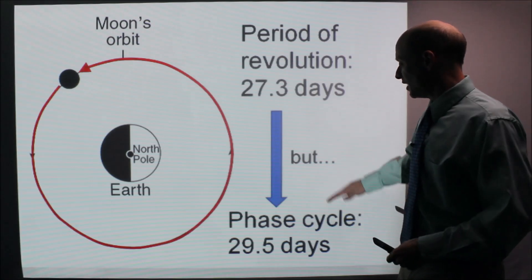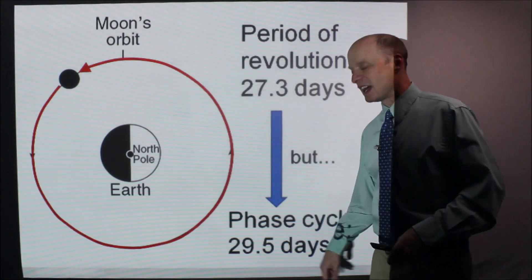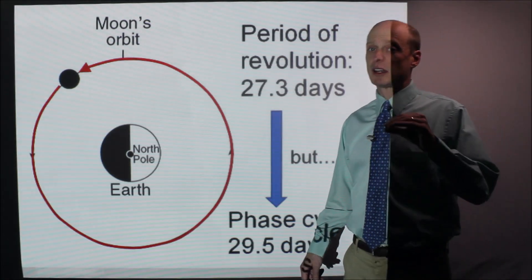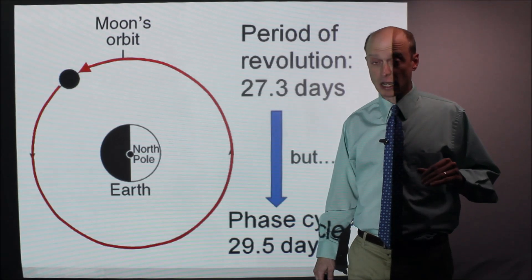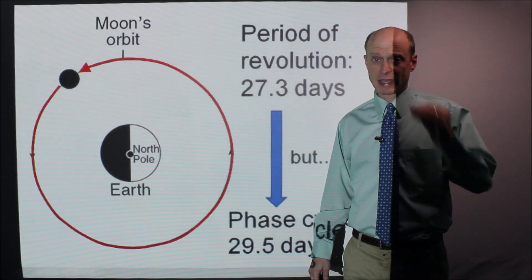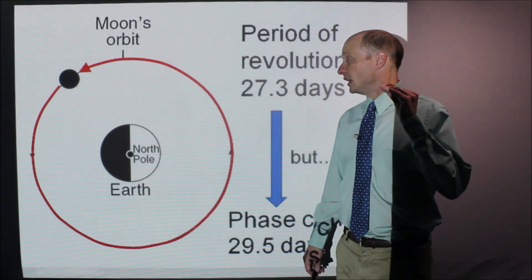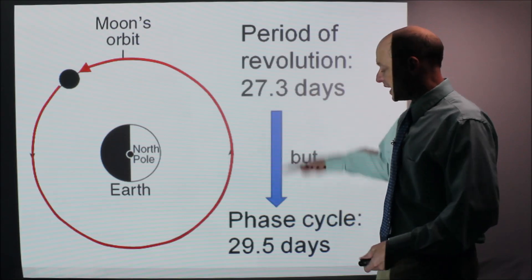Now, this is where it starts getting weird, but the phase cycle is 29.5 days. And I'll get into that when I get into moon phases in a different video. But those days are different.